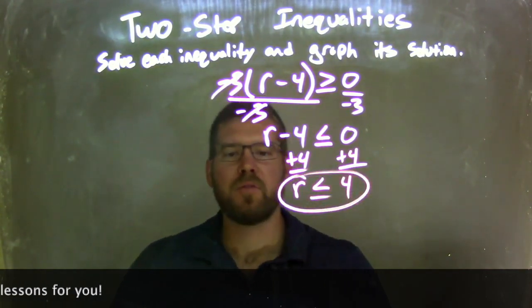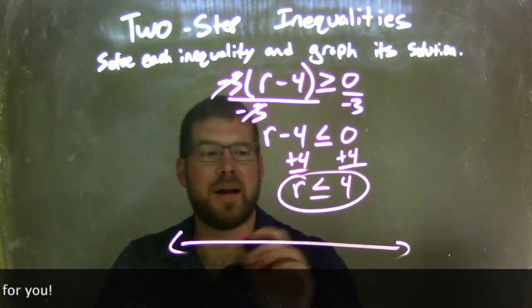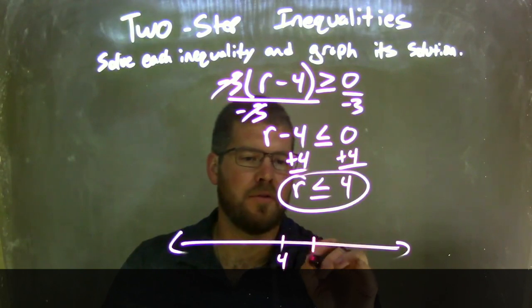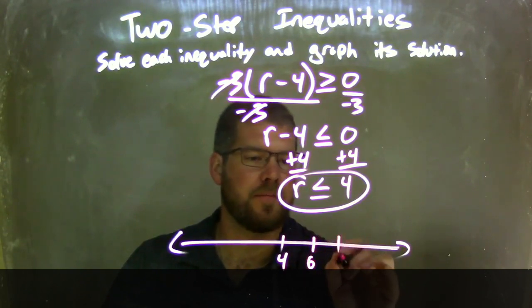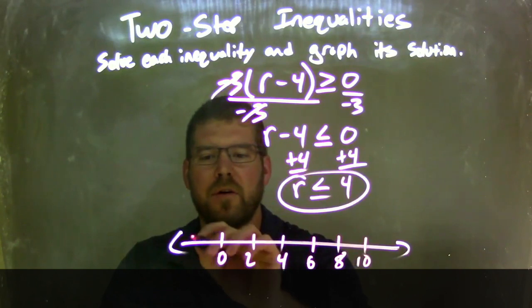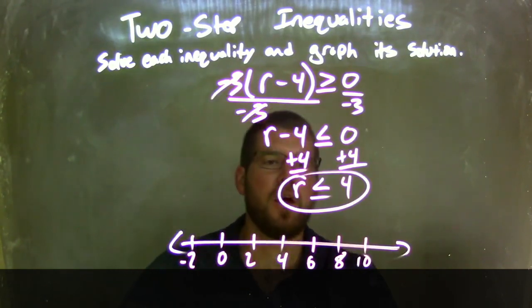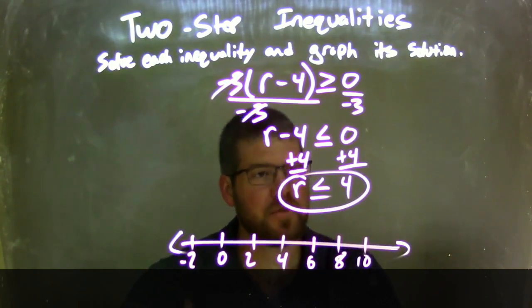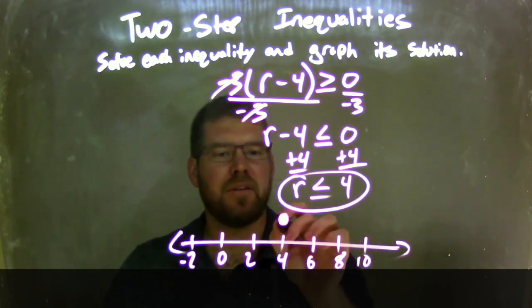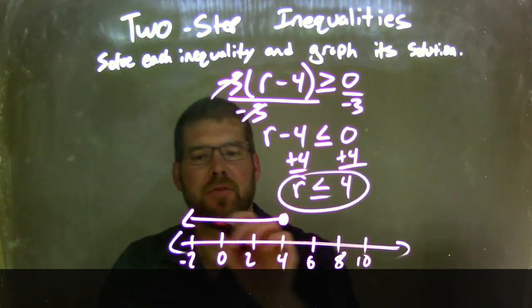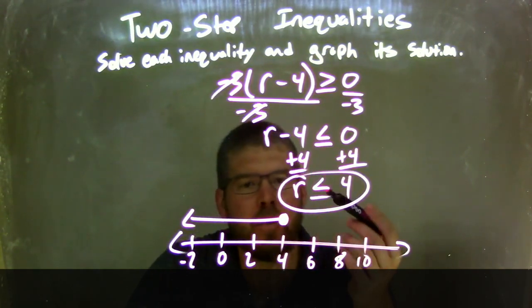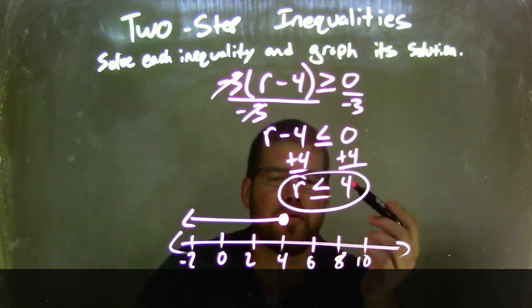Now I need to graph it. Let's put 4 right in the middle and go by 2s: 6, 8, 10, and 2, 0, negative 2. We said R is less than or equal to 4, so we have a closed circle at 4 because it can equal 4. Since it's less than, I put my arrow to the left. I have my graph that matches my inequality of R is less than or equal to 4.